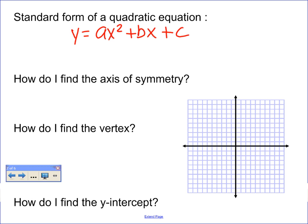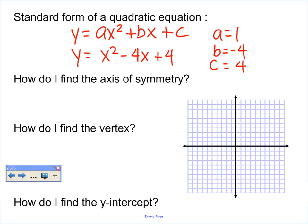Let's look at an example. Let's say I have y equals x squared minus 4x plus 4. Can you figure out what the a value, b value, and c values are for that equation? A is — I don't see any number there, so if there's nothing, then you put a 1. So a is 1, b is negative 4, and c is positive 4.